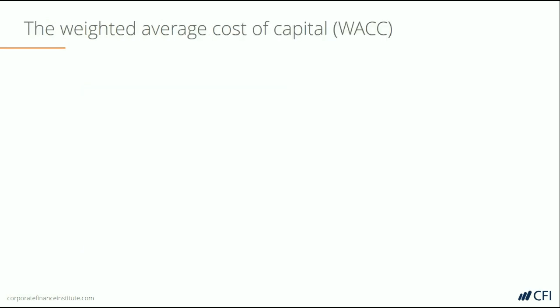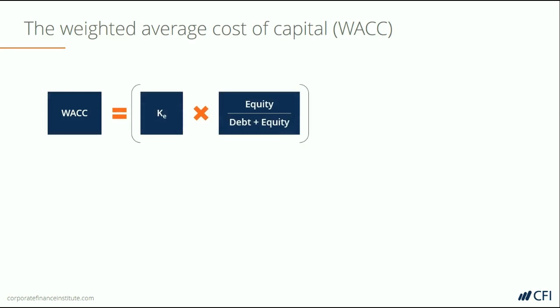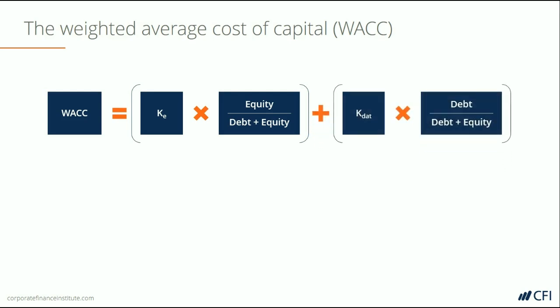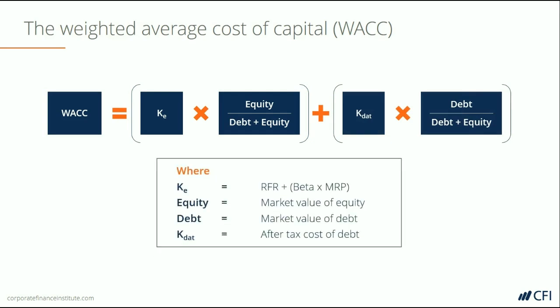Let's work through a couple of examples of calculating a firm's weighted average cost of capital. As a refresher, the WACC formula equals the cost of equity multiplied by the proportion of capital in equity, plus the cost of debt after tax multiplied by the proportion of capital from debt. The cost of equity equals the risk-free rate plus beta times the market risk premium. Equity is valued as the proportion of equity capital relative to total capital, and debt is the proportion of debt relative to total capital. The after-tax cost of debt is the yield of debt multiplied by one minus the tax rate.